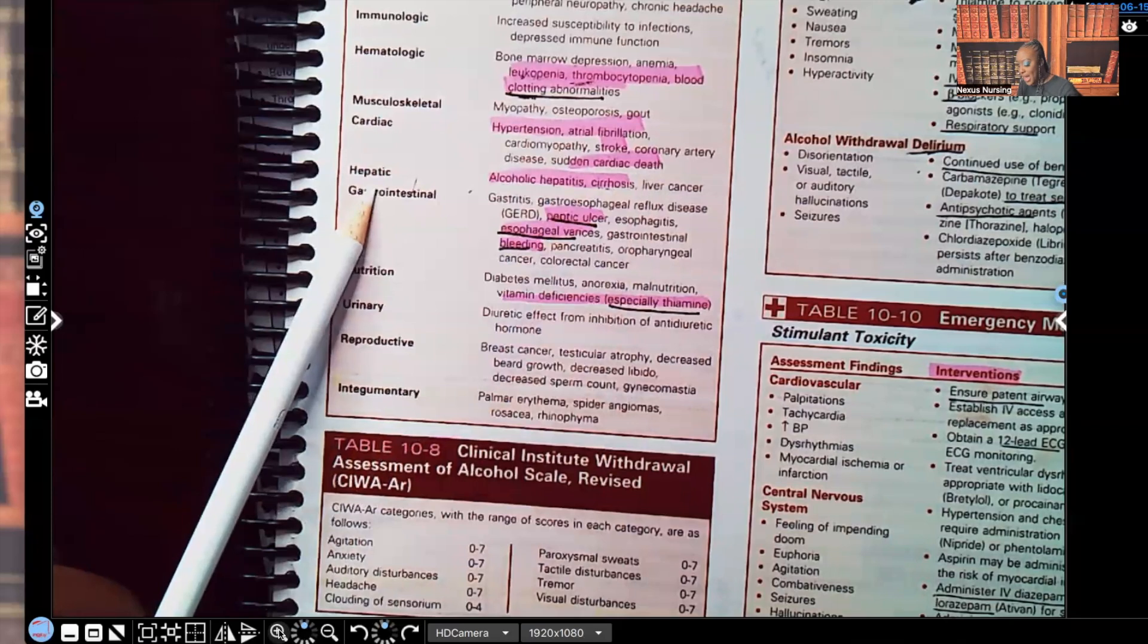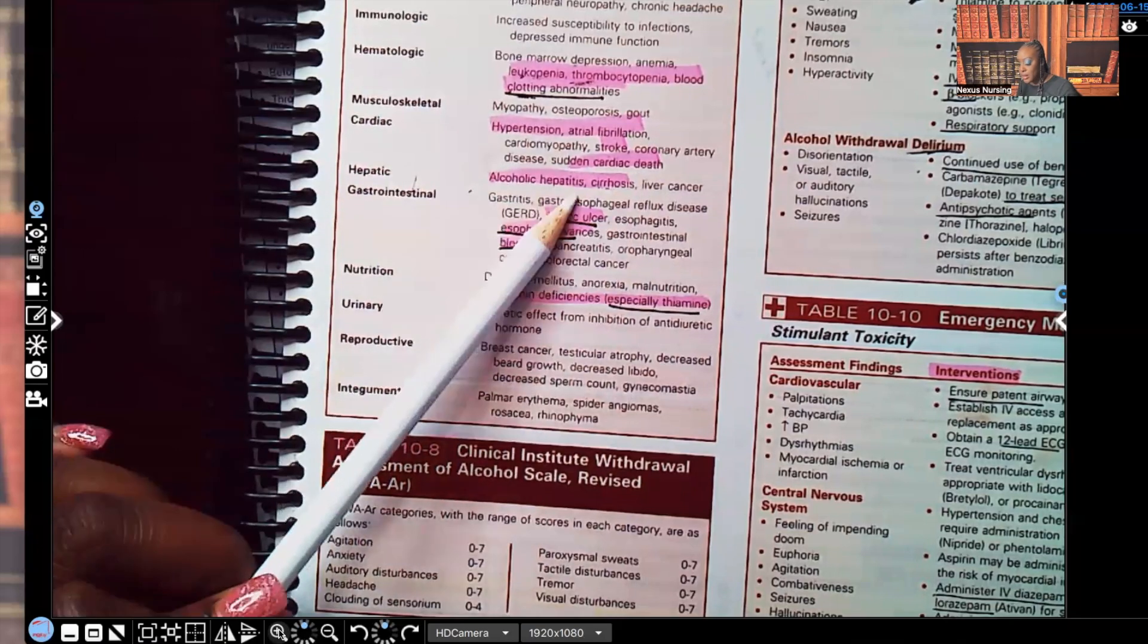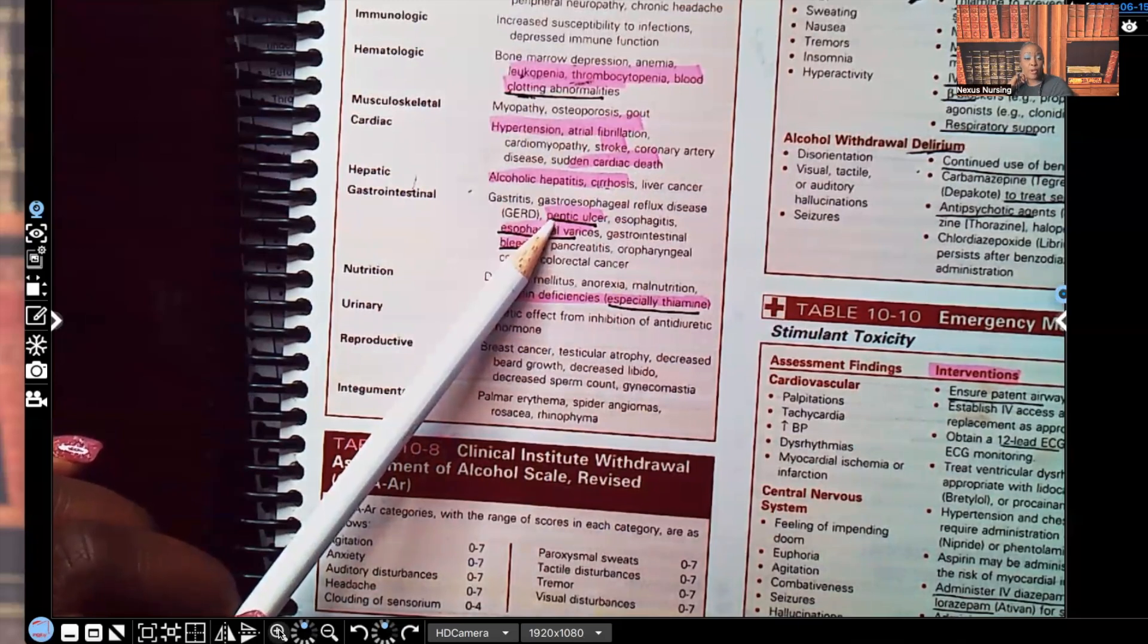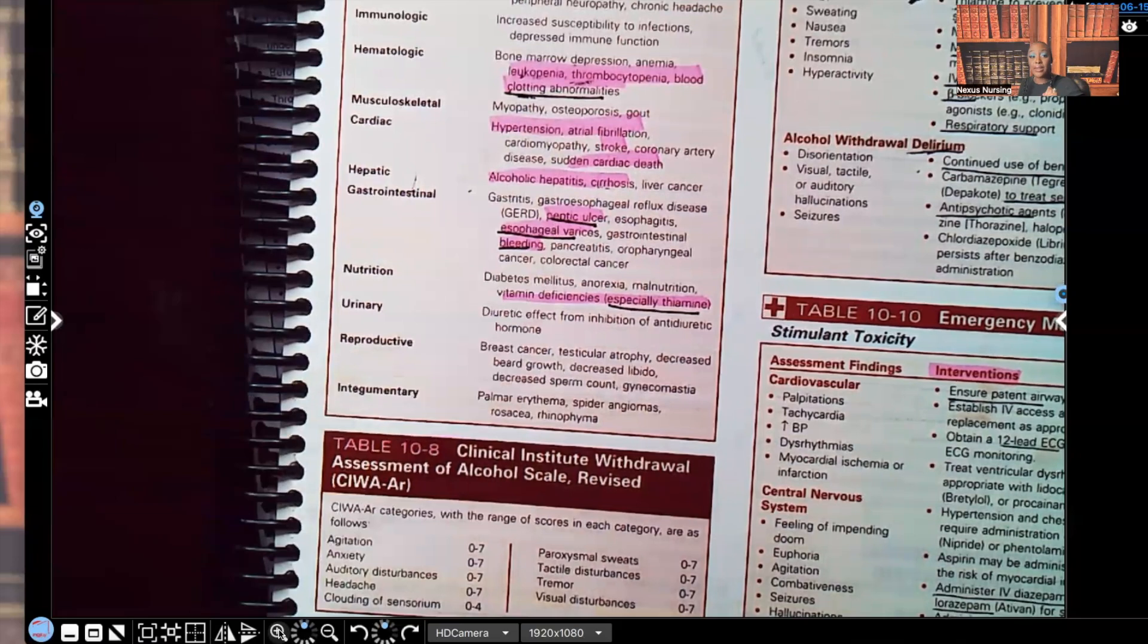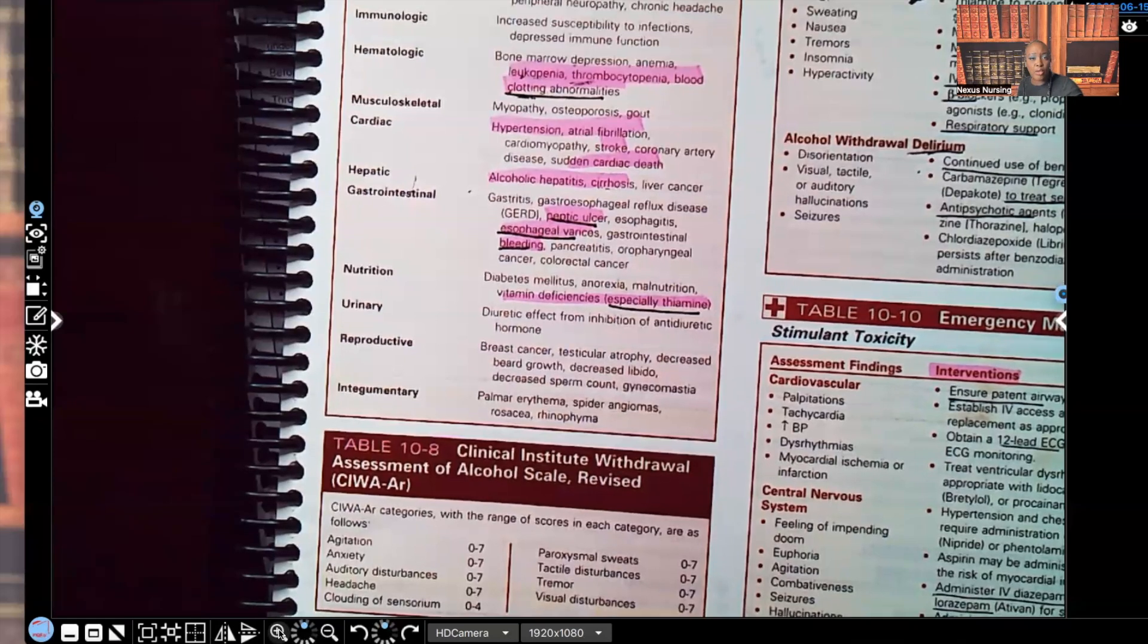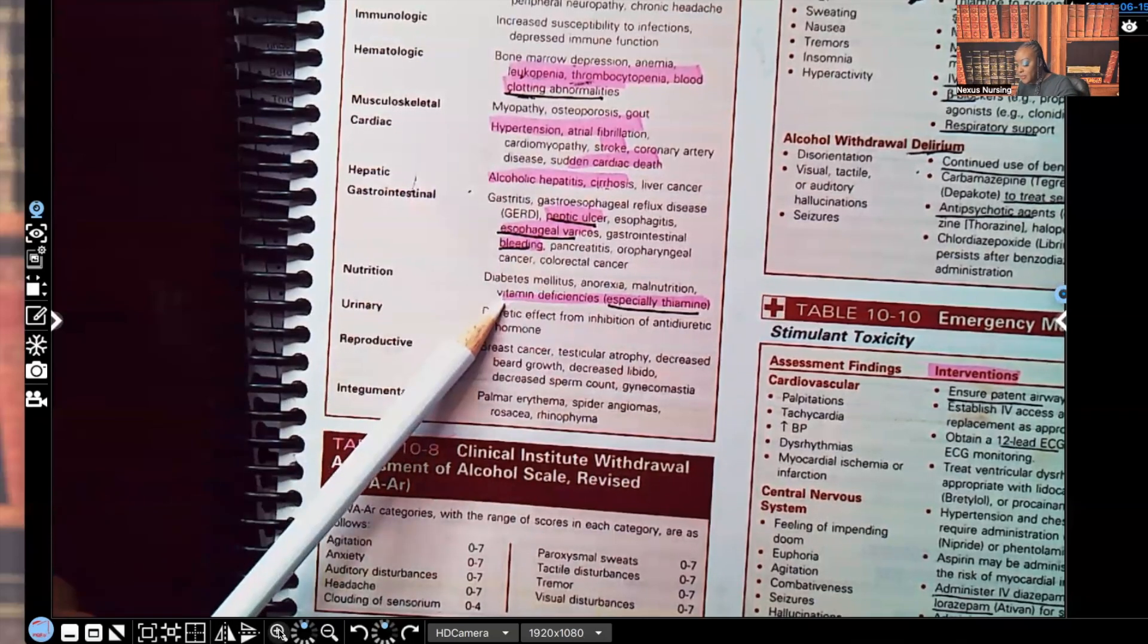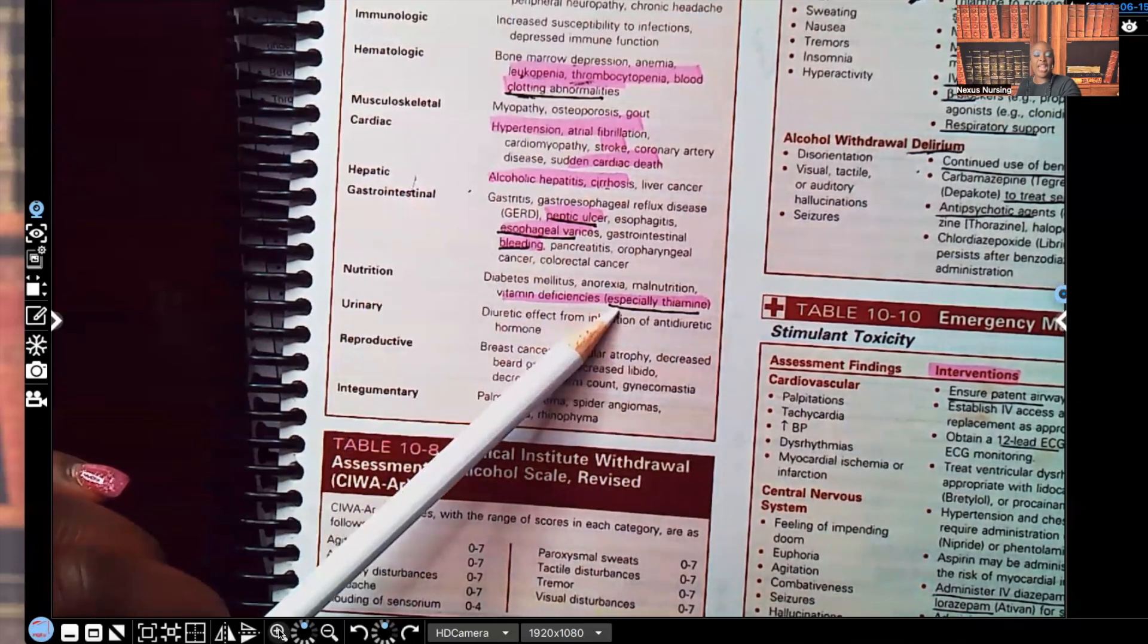What can happen to the liver? Now we're talking about hepatic. Alcoholic hepatitis, cirrhosis, liver cancer. GI, yeah, alcohol causes ulcers. And guess what? Those ulcers bleed. So that patient is at risk for bleeding to death. Let me tell you something, anything that affects the liver can cause the patient to bleed. Because remember, your clotting factors are made in the liver. So if the liver is affected, there's a high chance that patient's going to have bleeding disorders. They're going to have clotting disorders. It makes sense. Esophageal varices, bleeding, nutrition, they're going to have vitamin deficiencies, especially thiamine. And you expect to be replacing this in the patient. That's very important to know. NCLEX expects you to know that as well.